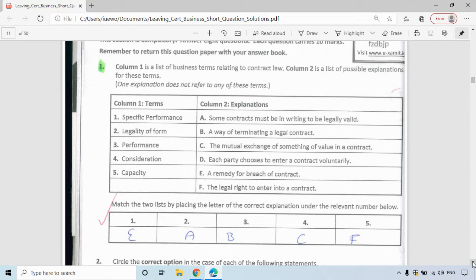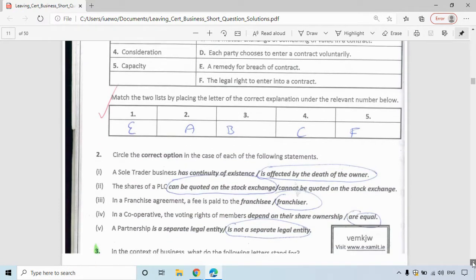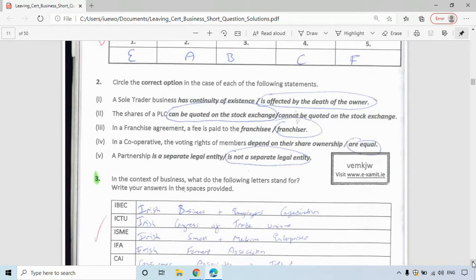We'll move on now to the next question, which is 2. You have to circle the correct option in the case of each of the following statements. A sole trader is affected by the debt of the owner as was one person in charge. The shares of a public limited company are quoted on the stock exchange. In a franchise agreement, a fee is paid to the franchisor.